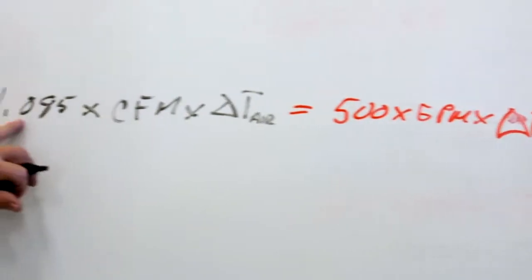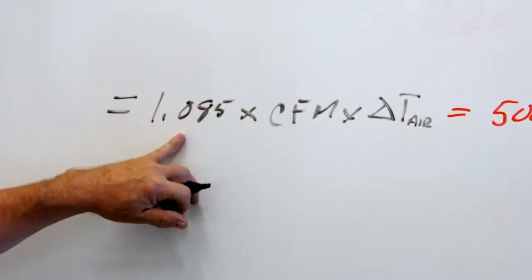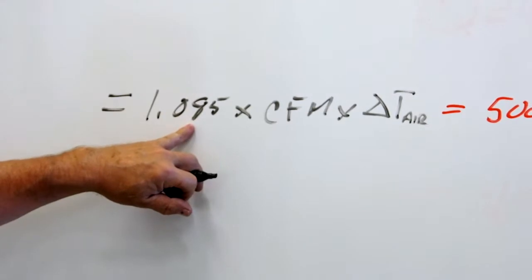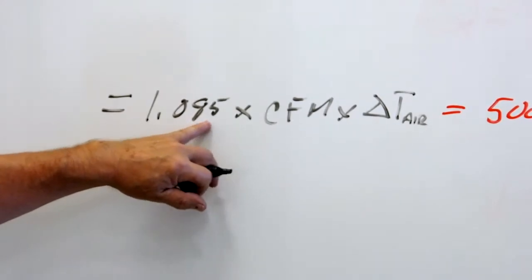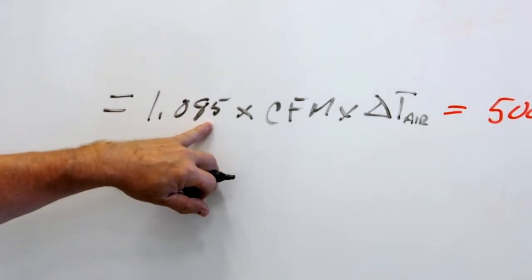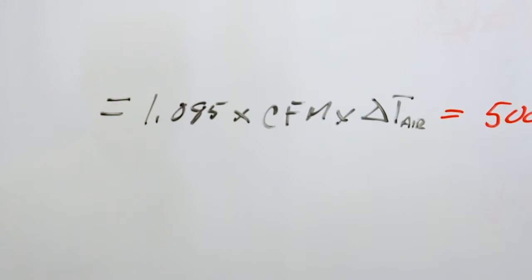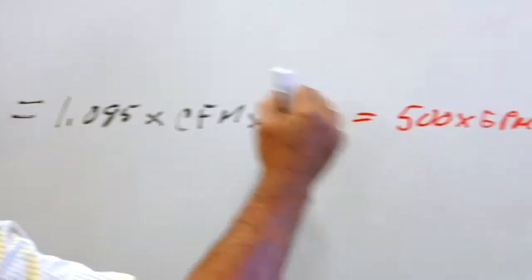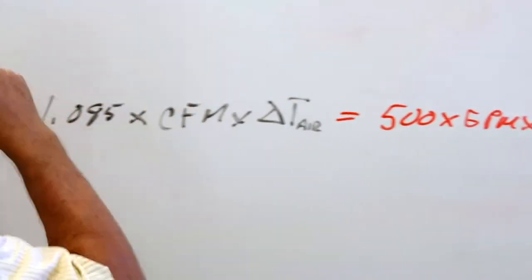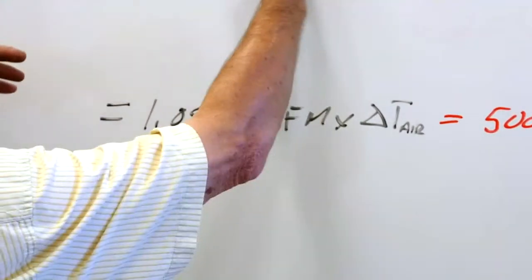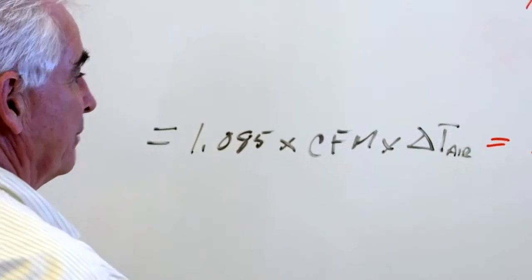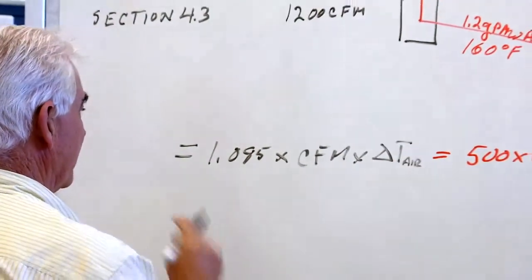Some people use 1.08, some people use 1.085. 1.08 is typically for very dry air; 1.085 is for air with a bit of moisture in it. The amount of heat absorbed by the air is equal, in theory, to the amount of heat given off by the water, so these two equations will be set equal to each other.